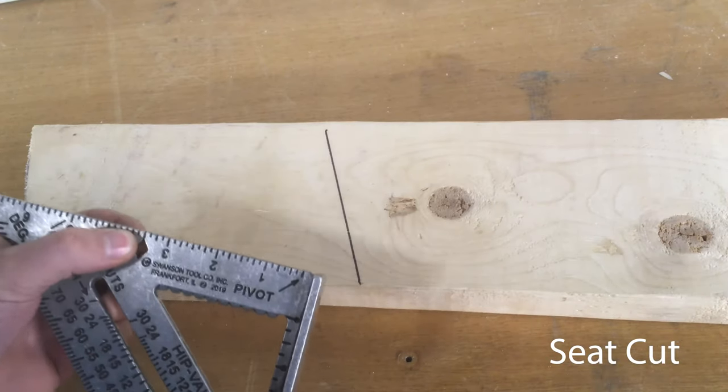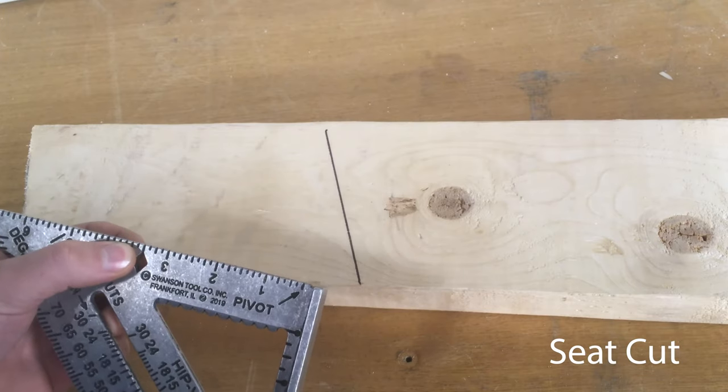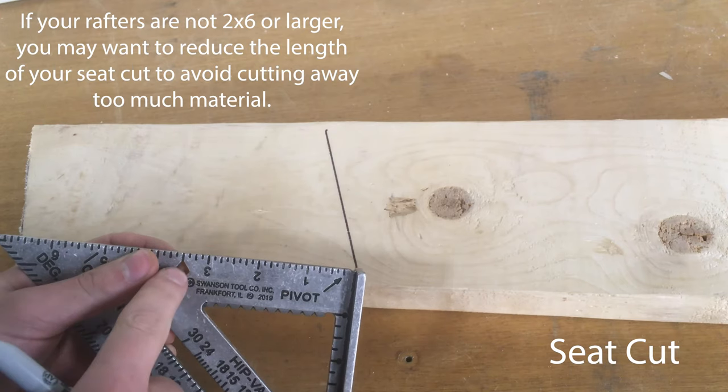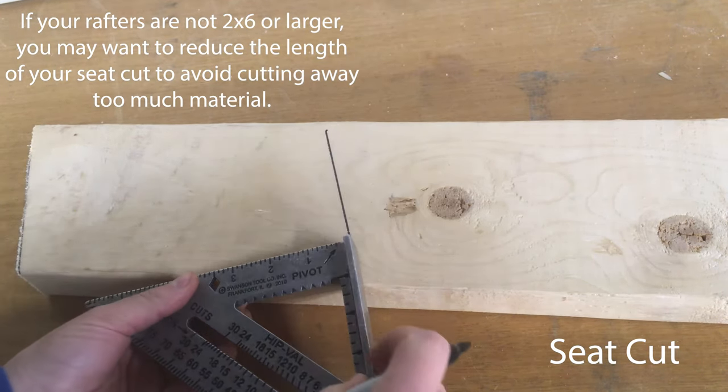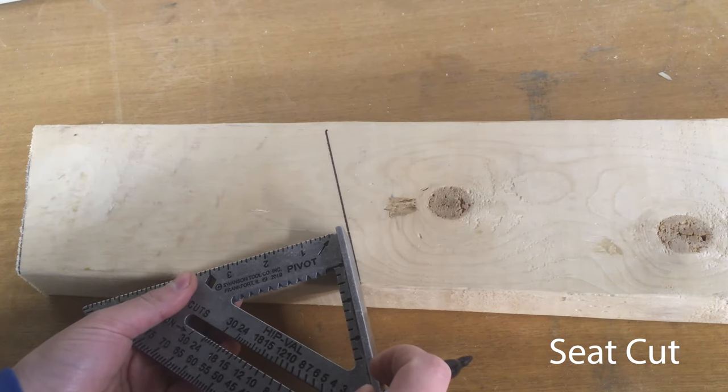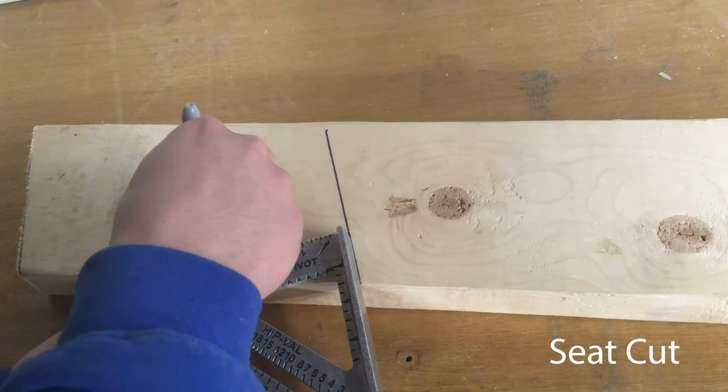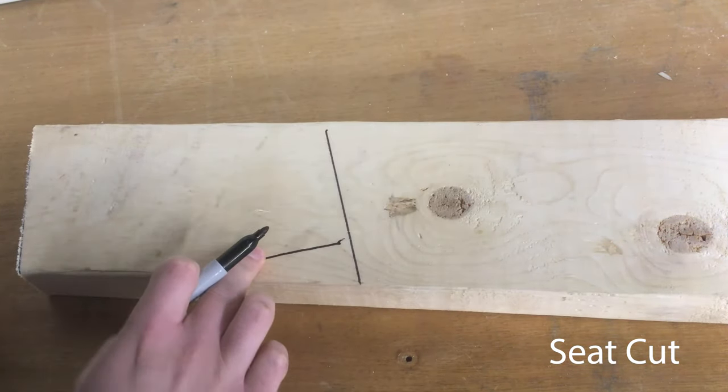While I don't believe there's a standard for the length of the seat cut, I like to use the width of my top plate, which would be 3.5 in this case for 2x4 construction. So I go to the 3.5 mark, put that on the edge of my rafter, and then square up the speed square to the heel cut mark I made. Then I can mark that straight line, and that will be my seat cut.